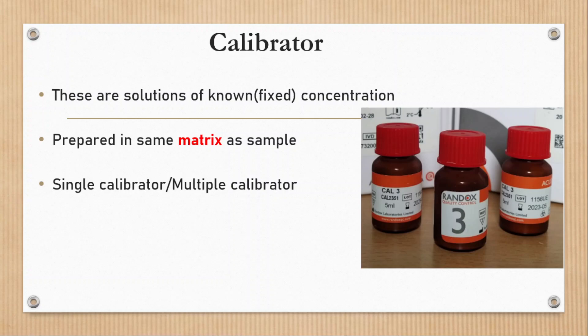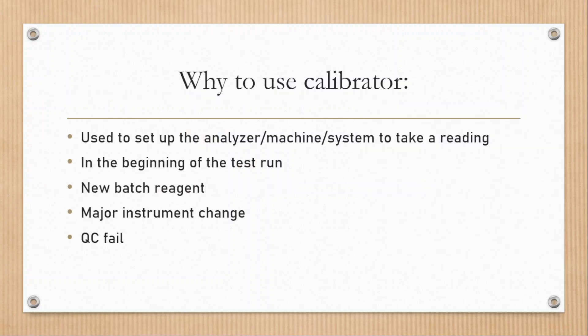They can be single or multi. Single calibrator is for calibration of single parameter, whereas multi-calibrator is for multiple parameters. Series of calibrators of different concentration can be used to establish calibration curve.